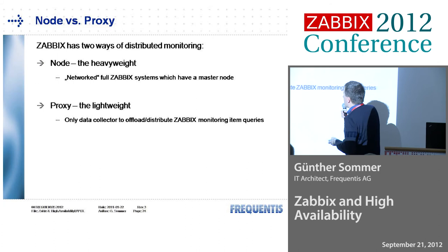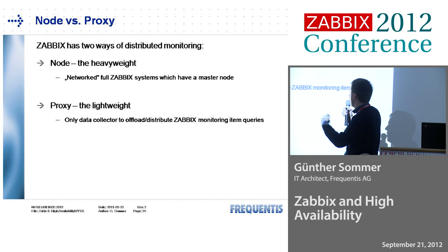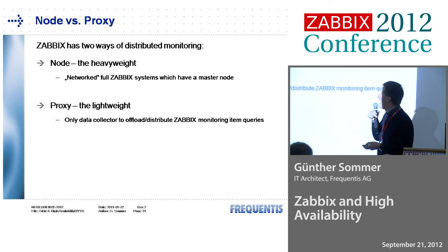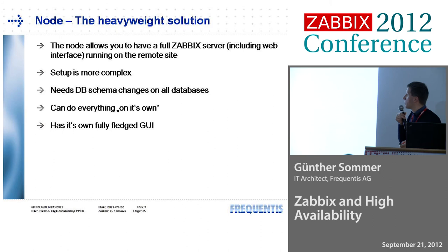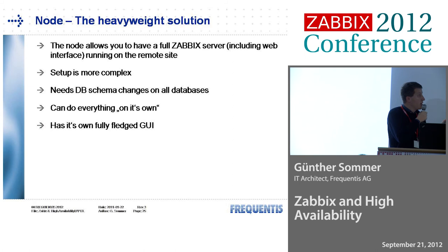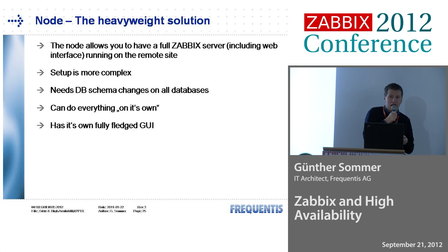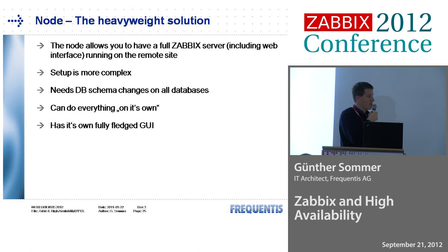Zabbix has two ways of doing it. There's a heavyweight solution with the node — so you have several Zabbix servers. You can place one Zabbix server on the A side and one on the B side. This is the discontinued one. And then there's the proxy, which is not just a small process but a small piece of software. With the node setup, you have a full-fledged server, your own GUI, you can do everything you like there. Just two minor things: you need to change the database schema on all databases, which you always like to do, and it's a one-shot thing — if it fails, you could have screwed up your Zabbix on all of your nodes.